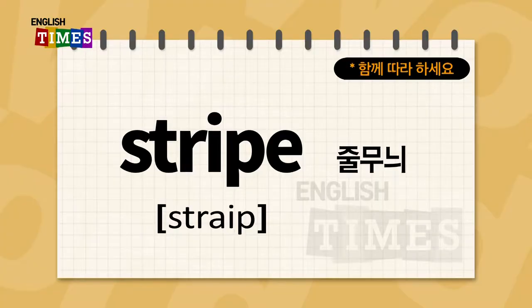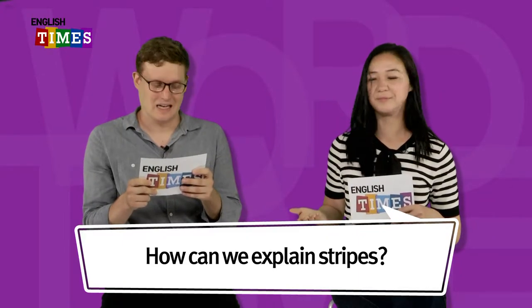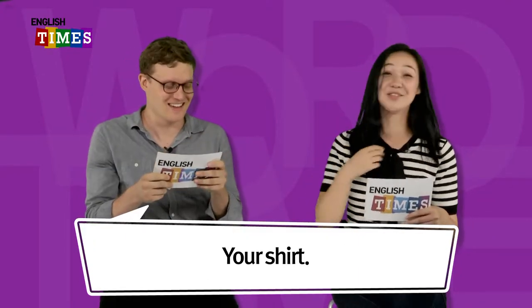줄무늬. Oh, how can we explain stripe? Your shirt — your shirt has stripes. 이게 stripe, 줄무늬. Stripe — stripe가 줄무늬죠. Great. The next word: state. 주가 state이에요. State. What state are you from? Have you heard of Missouri? I am from the state of Missouri. I was born in the state of Virginia. State — state가 주.